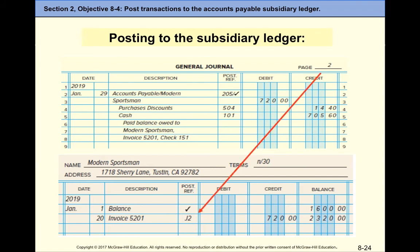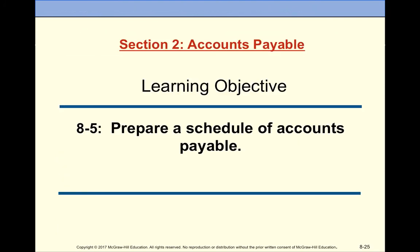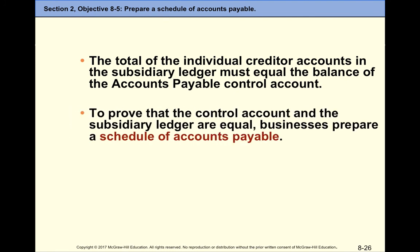People who work in accounts payable focus entirely on this account because it's so important — we need to make payments and capture discounts. At month-end, we take final balances from every vendor and list them all. We then verify that the total from the schedule of individual creditor accounts in the subsidiary ledger equals the balance of the accounts payable control account in the general ledger.